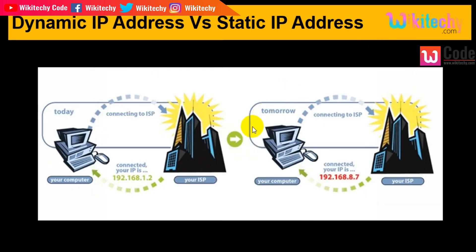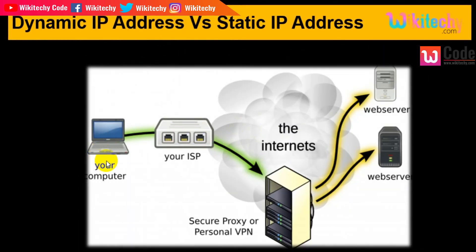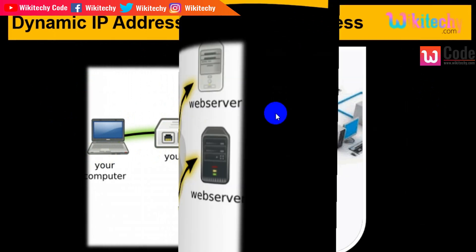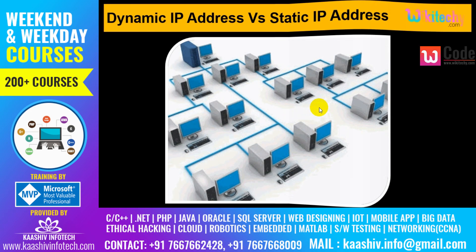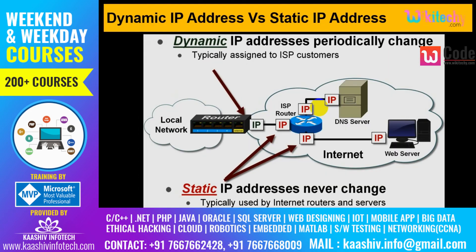Now let us move on. So this is your computer and this is your ISP, and you have the internet world. You will be connecting to servers — Gmail, Wikipedia, Facebook, LinkedIn. The computers are connecting and IP address transformation happens at this stage. This is how the network is formed — the computer is interconnected with multiple computers, the network is formed, and data is transferred.